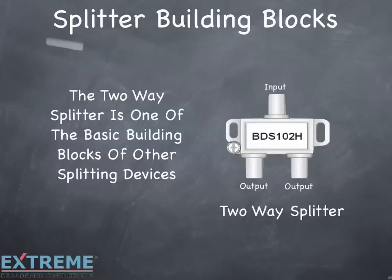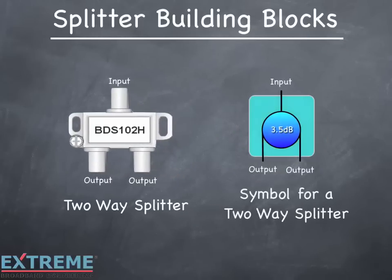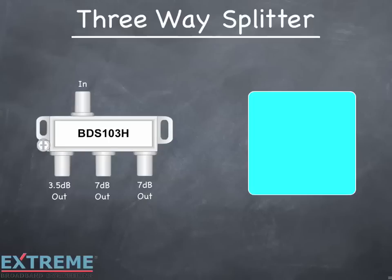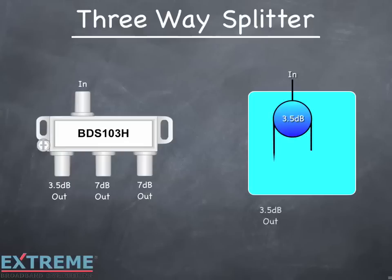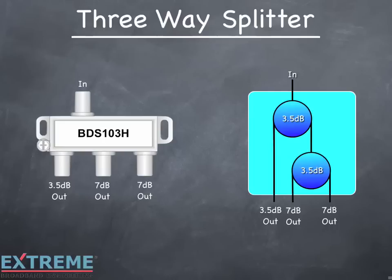The two-way splitter is one of the basic building blocks of other splitting devices. On the left we're showing a two-way splitter; on the right is the symbol equivalent indicating the input, 3.5 dB of loss, and two outputs. Using this symbol, let's build other splitting devices. On the left is an unbalanced three-way splitter with one leg losing 3.5 dB and the other two losing 7 dB. The 3.5 dB leg is fed directly from one leg of a two-way splitter. Adding one more two-way splitter to the other output port gives a 7 dB loss. So a three-way splitter is made up of two two-way splitters.